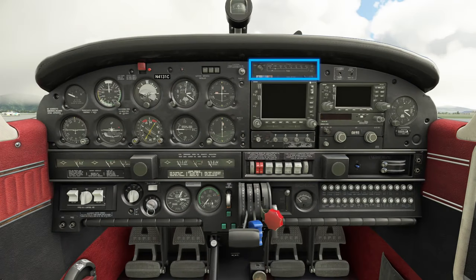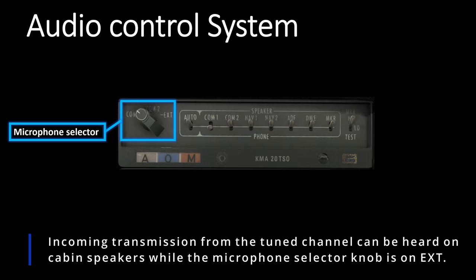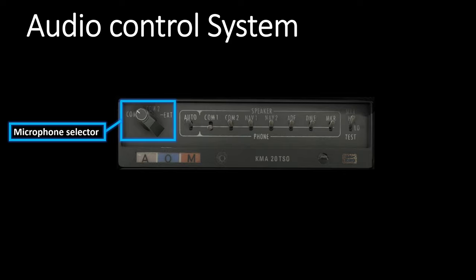First of all, there is an audio control system and marker beacon receiver on the top. This knob on the left controls the communication channel the microphones will be transmitting to. COM1 and COM2 allow the microphone transmission to frequencies tuned in COM1 and COM2 respectively. EXT means the microphone will transmit to the cabin addressing system, so in case you want to talk to the passengers behind you, the incoming signal on that channel would also be on the main speakers.